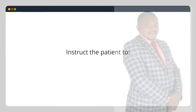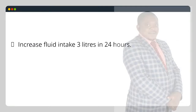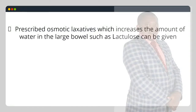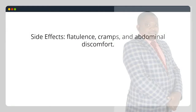Constipation. Instruct the patient to: eat high-fiber foods such as bananas, oranges, cucumbers and vegetables like cabbage; increase fluid intake to 3 liters in 24 hours; take stool softeners like Dulcolax as needed. Prescribe osmotic laxatives which increase the amount of water in the large bowel, such as lactulose. Dose: 3.1–3.7 grams/mL orally 4 times a day. Side effects: flatulence, cramps and abdominal discomfort.